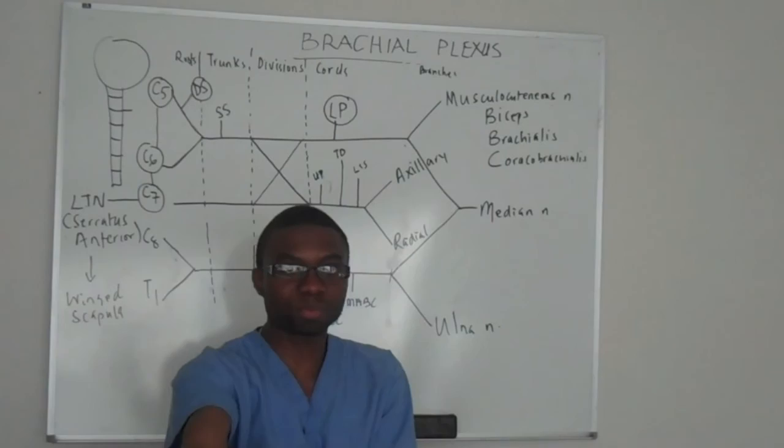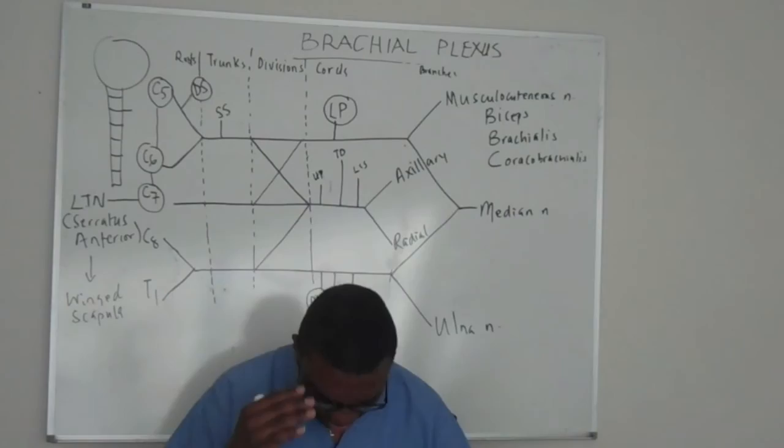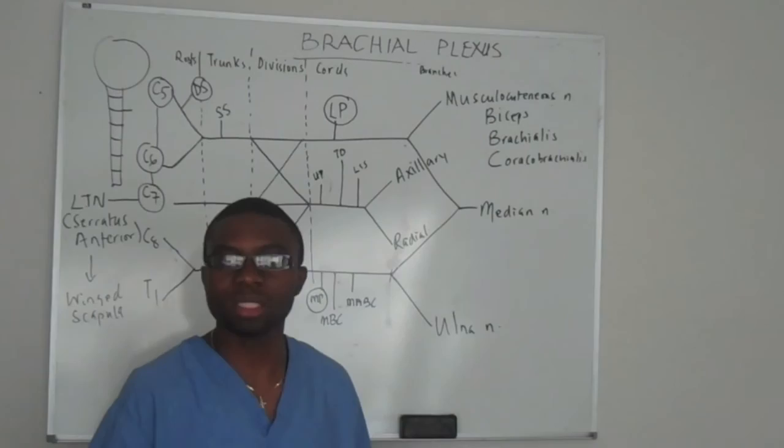So it's going to be your biceps, a little bit of your brachialis muscle right there, and the coracobrachialis, which comes from your coracoid process all the way down to the medial aspect of your humerus. And you're done. You don't have to worry about anything else. Moving on.